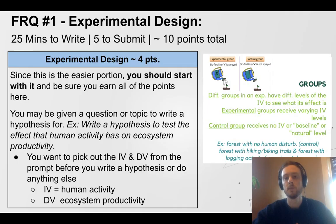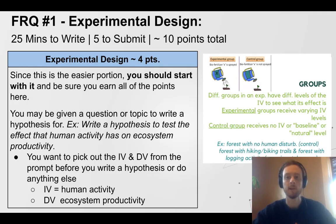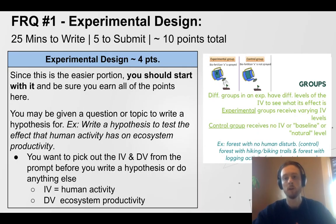You will likely be asked to identify the groups you're using in your experiment. In every APES scoring guide I've ever seen on an FRQ, you need at least three groups to earn credit — one control group and two or more experimental groups. Remember, the control receives no independent variable or the IV is held at a natural or baseline level. For example, if we wanted to see how biofertilizer X works, our experimental groups would have different levels of biofertilizer X, but our control would not receive biofertilizer X. We need to compare growth of plants that get the fertilizer with plants that just get water.